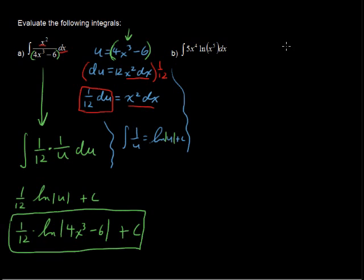So, I'll say u equals x to the fifth. And then with the process that we're using, the u substitution, we take the derivative of that u. And so, du equals 5x to the fourth dx. So, we're golden with that. We're able to substitute that directly. And the u goes in for x to the fifth.